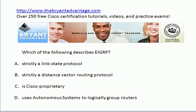EIGRP is a Cisco proprietary protocol, and it uses autonomous systems to logically group the routers. It is not strictly link state or distance vector.